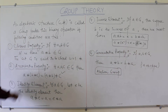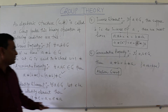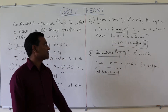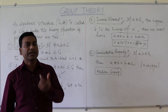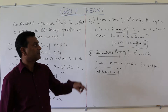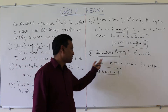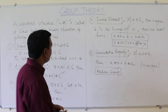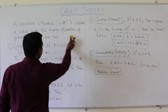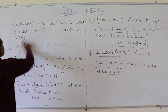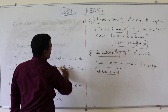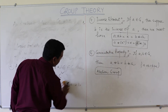So these are the five properties. First is closure property. Second is associative property. Third is identity element. The fourth property is the inverse element — if we take any element, there will be an inverse of that element. The fifth is the commutative property. Now we will see the types of groups, which are based on these five properties.